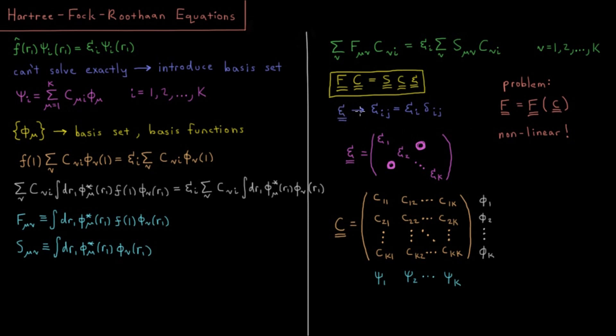The elements of epsilon are just the orbital energies on the diagonal and zeros elsewhere. Then this last matrix is what we call the C matrix or the coefficient matrix. Basically, a single column of the C matrix represents all the coefficients which indicate how you form a particular molecular orbital out of all of these atomic basis functions.